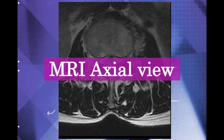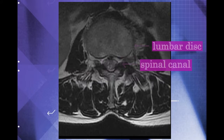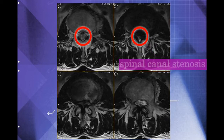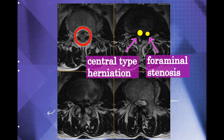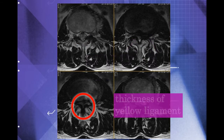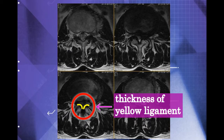This figure shows the actual MRI of the patient. Severe spinal canal stenosis occurred due to the huge central type herniation and the thickness of the yellow ligament. The left lateral foramen is also narrow due to the lateral herniation.